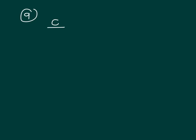Alright, the ratio of cello to violin is 4 to 5. There are two more viola players than cellos, so viola would equal C plus 2. There are two more viola players than cello players.